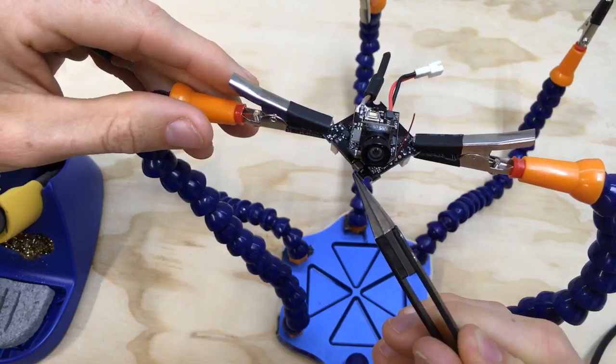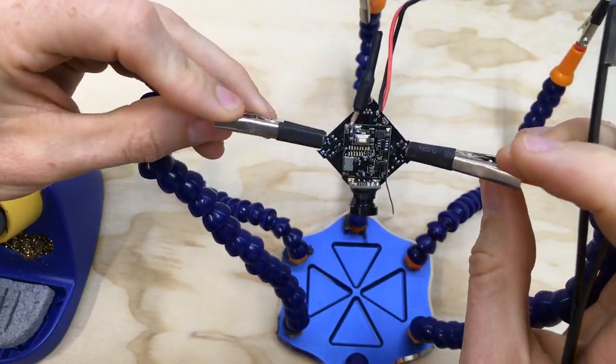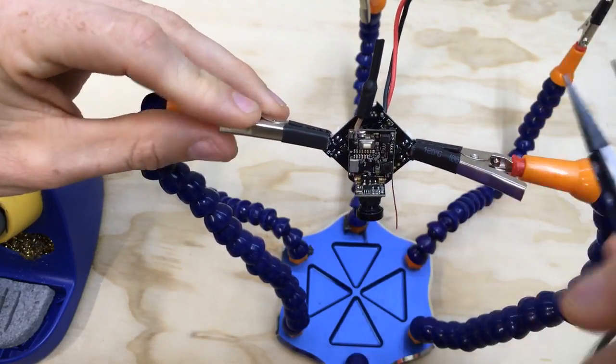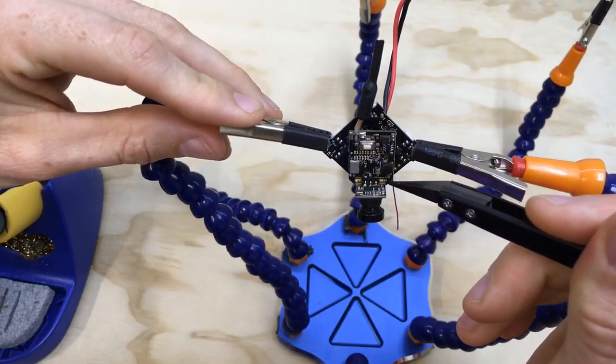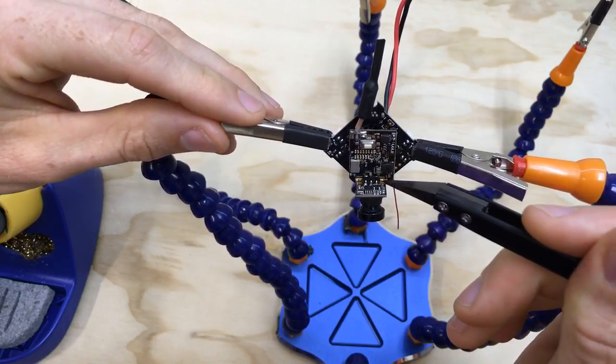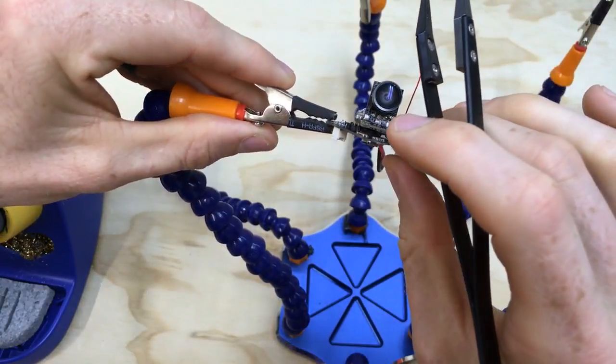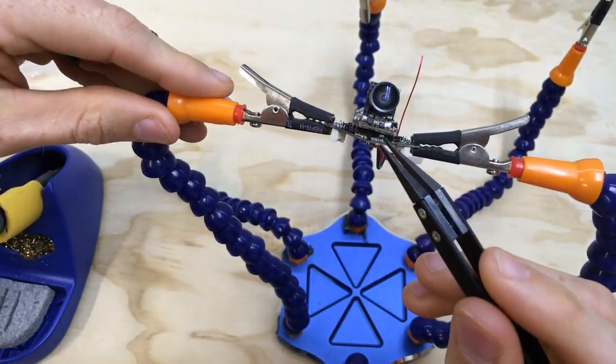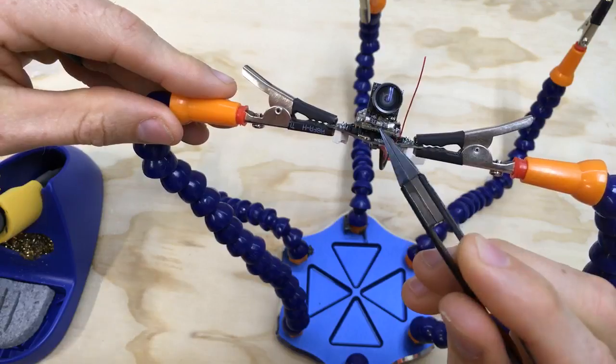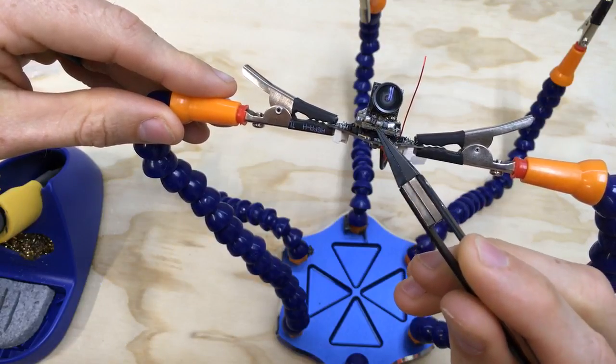They're just there as solder pads to give it a little bit more strength than just having these header pins try to hold the camera in position. So that being said, we don't have to really worry about these pads on the front side as far as repairing anything. We just need to get these three little pins here sorted and figure out what's stopping the camera from transmitting.